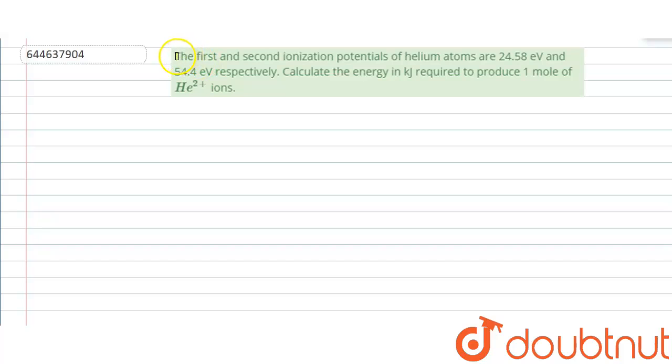Hello, here the given question is: the first and second ionization potentials of helium atom are 24.58 electron volt and 54.4 electron volt respectively. We have to calculate the energy in kilojoules required to produce 1 molar helium 2+ ions.